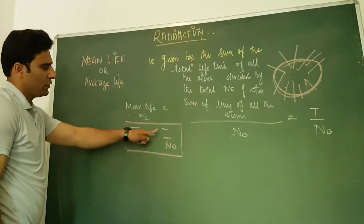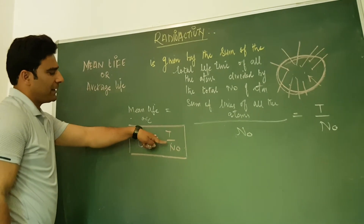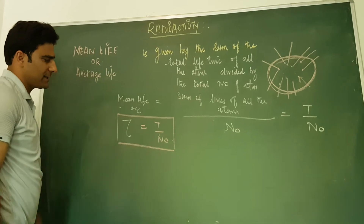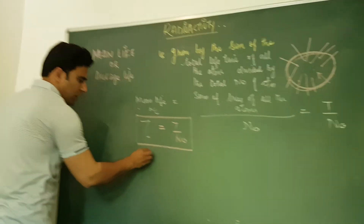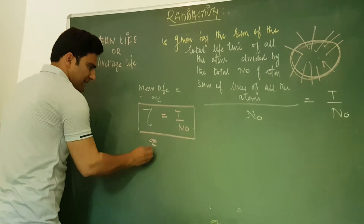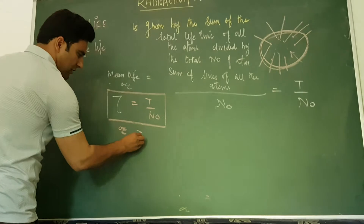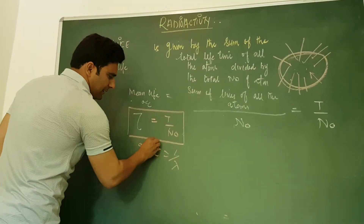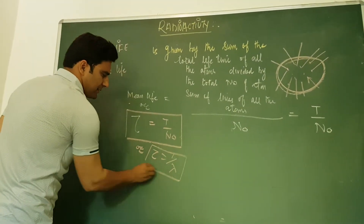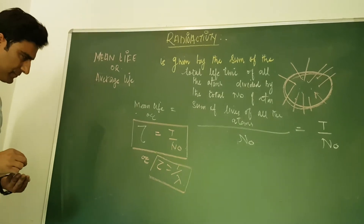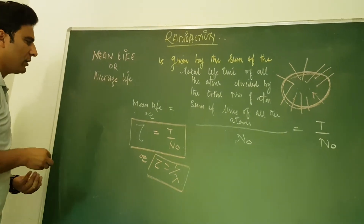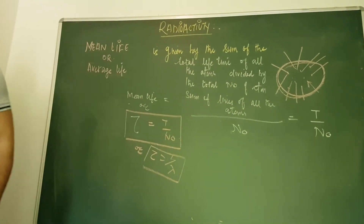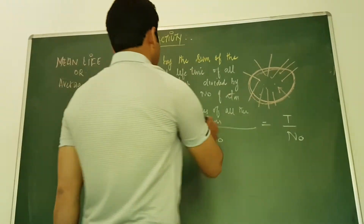This is the average life — total lifetime of all the atoms divided by total number of atoms, represented by N₀. It is also defined as tau equals 1 upon lambda, that is the decay constant. So tau equals T divided by N₀, and tau is also equal to 1 upon lambda.